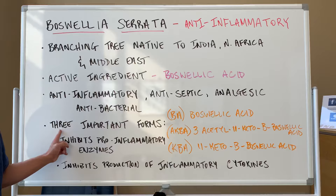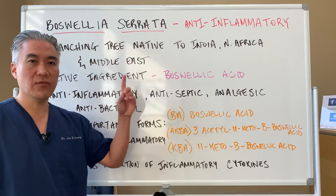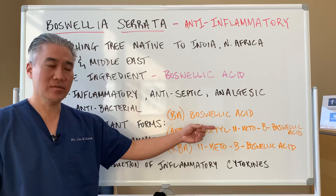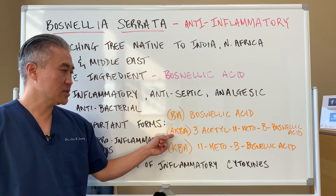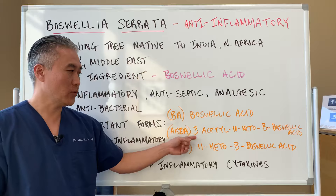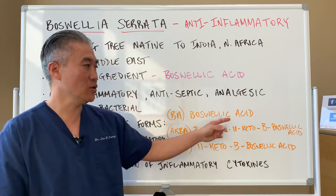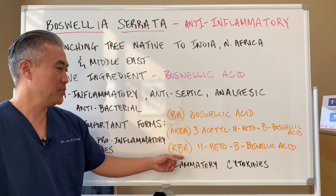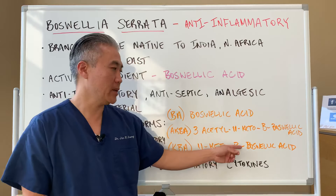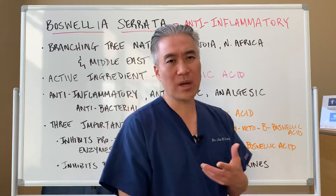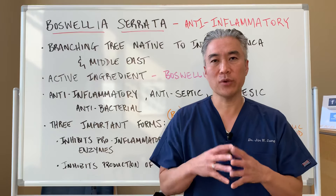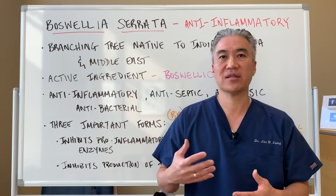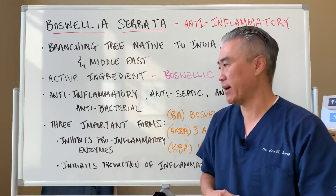There are three important forms of Boswellia: BA, Boswellic Acid; AKBA, or 3-acetyl-11-keto-beta-Boswellic Acid; and KBA, 11-keto-beta-Boswellic Acid. There are probably about six forms of them, but those three are the most potent ones that are most effective in terms of anti-inflammatory effects.